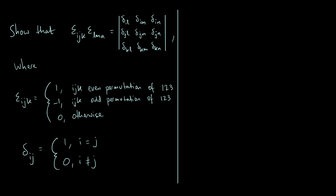I'm not going to give a full introduction to what those are, but in brief here are the definitions. The Levi-Civita symbol epsilon_ijk is 1 if the i, j, and k indices are an even permutation of 1, 2, 3. So epsilon_123, epsilon_312, and epsilon_231 are all 1.